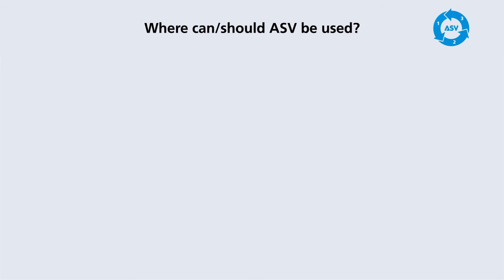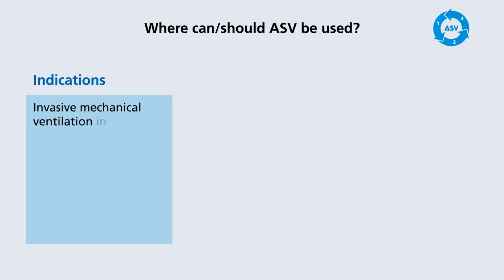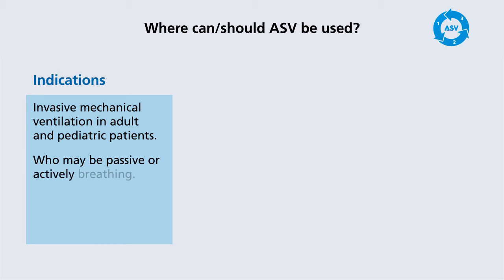Where can ASV be used? ASV is indicated in intubated and mechanically ventilated adult and pediatric patients who suffer from respiratory failure due to various causes. The patients may be passive or actively breathing. ASV can be used as a single mode during the entire course of mechanical ventilation, from intubation to extubation.